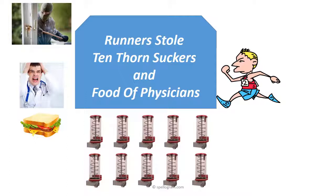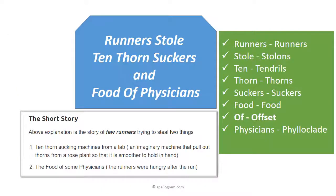So let's now see how this trick will help us to come up with the actual list of stem modification. You can see that each word from this trick is corresponding to a type of stem modification. For example, 'stole' stands for stolon, 'ten' stands for tendrils. And suckers and runners — you see, they are actually the same. One of the advantages of this trick is it was constructed with your ease in mind, because once you remember this trick, most of the words resemble very closely to the actual words.